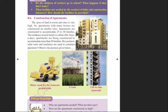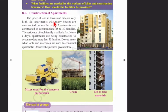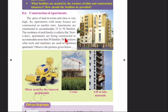See page 98, side heading: Construction of Apartments. The price of land in towns and cities is very high, so apartments with many houses are constructed on smaller sites. Apartments are constructed to accommodate 25 to 30 families. The residence of each family is called a flat. Nowadays, apartments are being constructed to accommodate more than 50 families and are found in cities and towns.